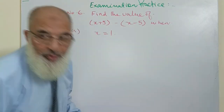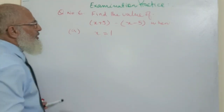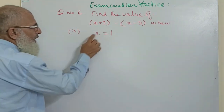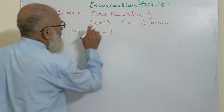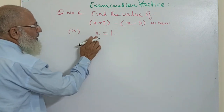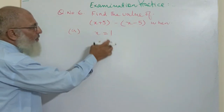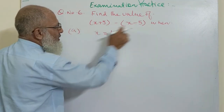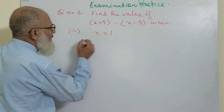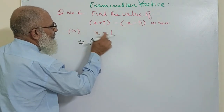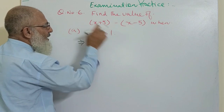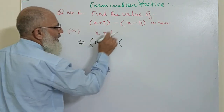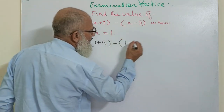Question number 6. My dear students, it is a very easy question. We have to find the value of this expression while x is given and that is 1. We will substitute the value of x in each of the brackets where x is written. So we will write 1 in place of x: 1 plus 5, minus, and again 1 minus 5.